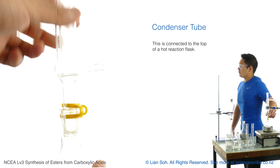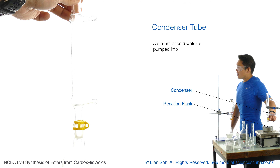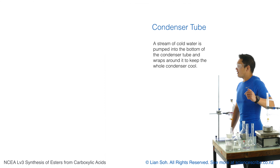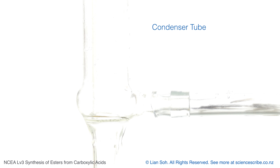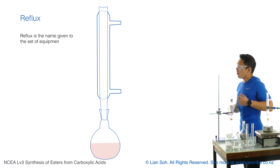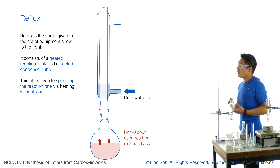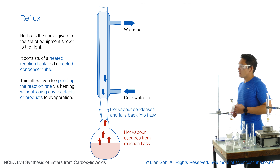The condenser tube does exactly what the name says — it recondenses things, in this case the vapors that try to escape through the flask. On the outside of the condenser tube is a second layer of glass, and cold water is pumped in at the bottom, circles around the inner tube, and escapes from the top. This keeps the top part of the flask cold, so any hot vapors which try to escape recondense back into the flask to either complete the reaction or remain as the product we want — in this case, the ester.